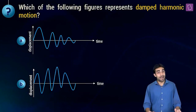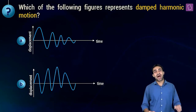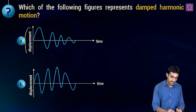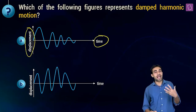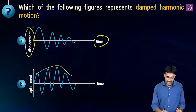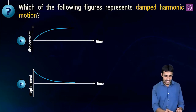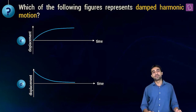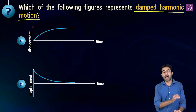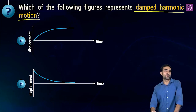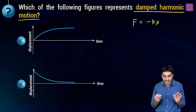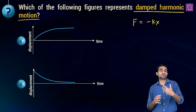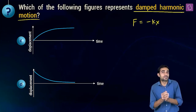Next question is on damping: which of the following curves represents damped harmonic motion? In graph A, amplitude decreases with time. In graph B, amplitude increases then decreases. In graph C, amplitude increases and becomes constant. In graph D, amplitude just decreases with time. Which correctly represents damped harmonic motion?